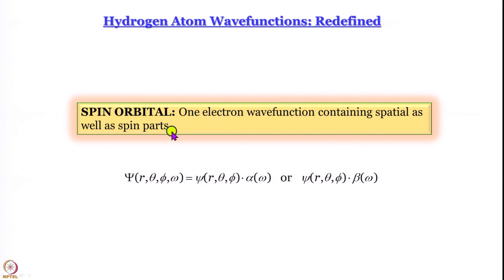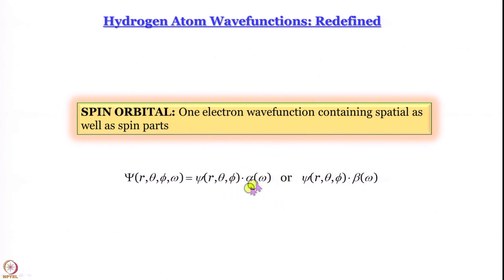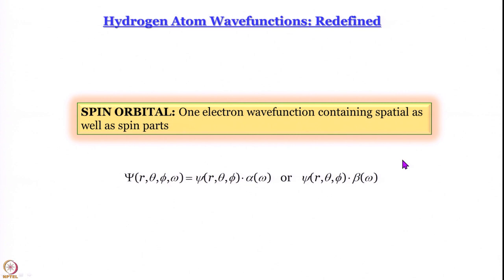For multi-electron atoms it is not sufficient to specify n, l, and m — you also have to specify m_s (not s, since s = ½ for all electrons anyway). The total wave function ψ, which is a function of r, θ, φ, and the spin coordinate ω, is given by the spatial wave function ψ(r,θ,φ) multiplied by the spin wave function α or β. For one electron, it can reside in the same orbital in two ways — up spin or down spin — giving two possible wave functions. This is called a doublet state.